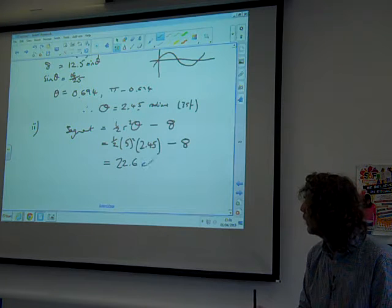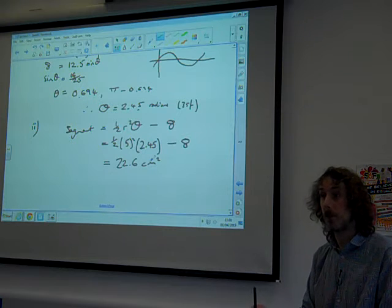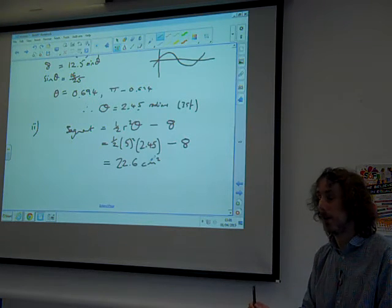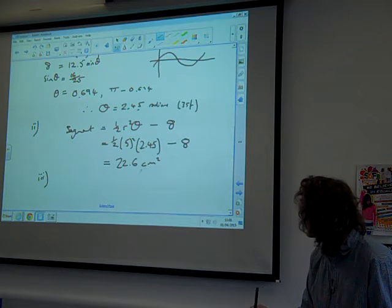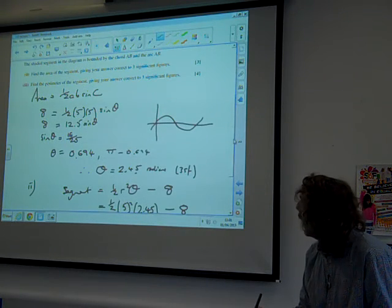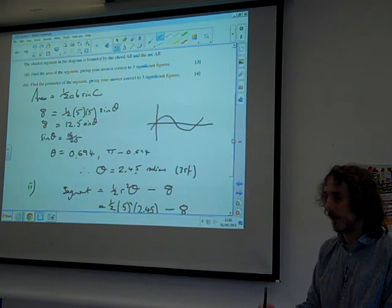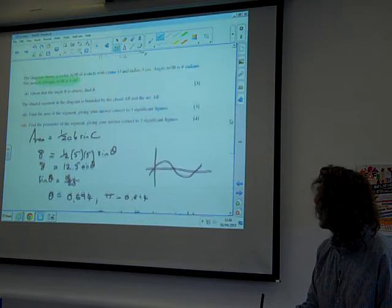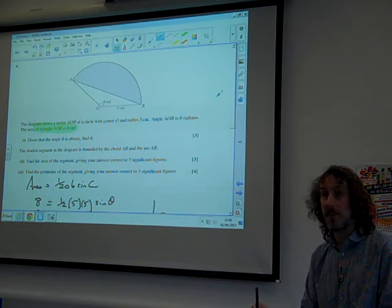Does that look right? Anybody agree? Is that agreement, Rachel? Brilliant. Great. Part 3: Find the perimeter of the segment, giving your answer correct to three significant figures. Let's go back and see the diagram. The perimeter of the segment, well, the first bit is going to be easy enough.